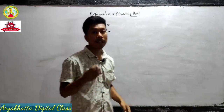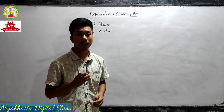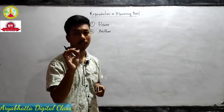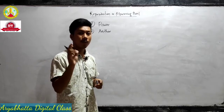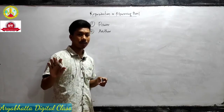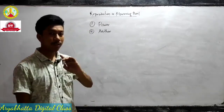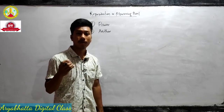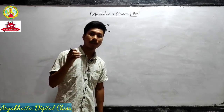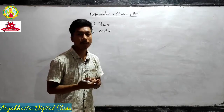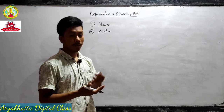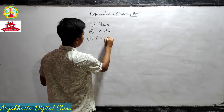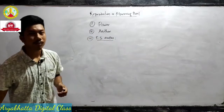Then we saw the structure of the anther. In most angiosperm plants the anther is a bilobed structure — two lobes attached with the help of sterile connective tissue to the filament. In a few cases we also find one lobe. We classified the anther on the basis of attachment: monothecous and dithecous, and on the basis of attachment with filament: dorsifixed, basifixed, adnate, and versatile anthers.